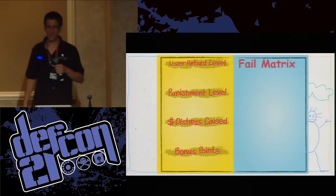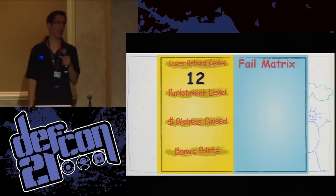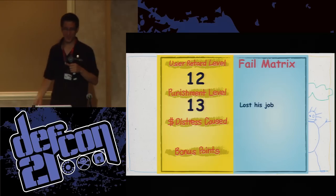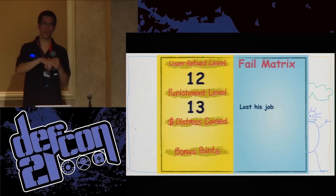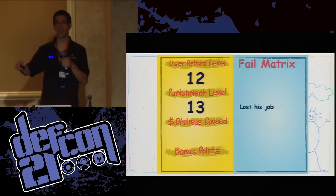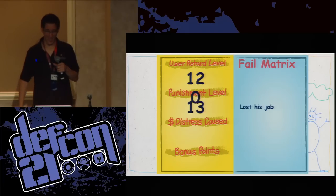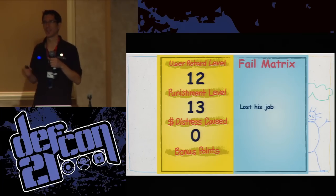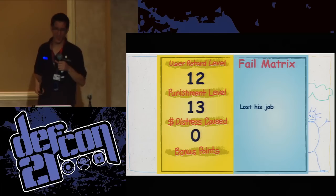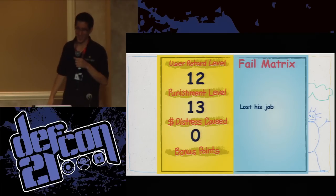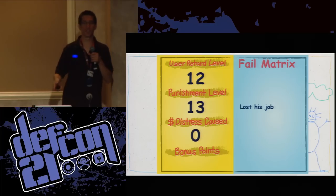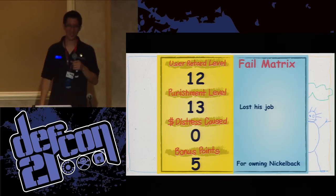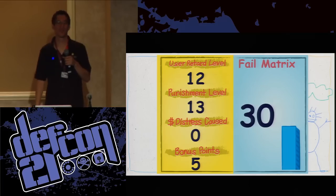The fail matrix: user retard level 12, because renaming a file is not data hiding. If you want to do real data hiding, you should have come to my ACL steganography talk. Punishment level 13 — he lost his job, not only at the previous company but also at the new company where he landed. Distress cost was zero — didn't really hurt anybody. Bonus points for the Nickelback factor. That brings us to a grand total of 30 fail points.